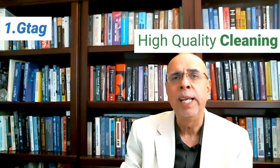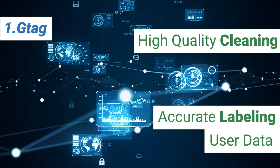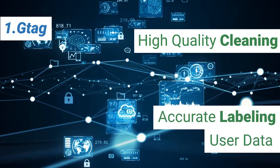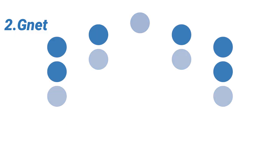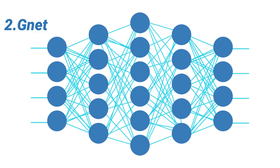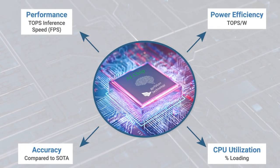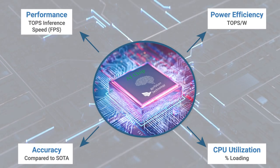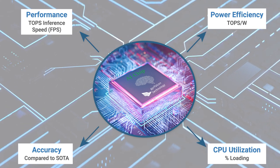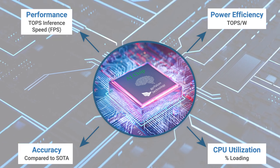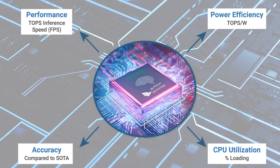On the first step, GTAC performs high-quality cleaning and accurate labeling of user data, raw data sourcing, or any given dataset. In the next step, GNET is used for optimizing network or model training. AIX maximizes on-chip resource utilization by jointly minimizing CPU loading, increasing on-chip power efficiency, and inferencing speed, while providing accuracy comparable to state-of-the-art solutions.